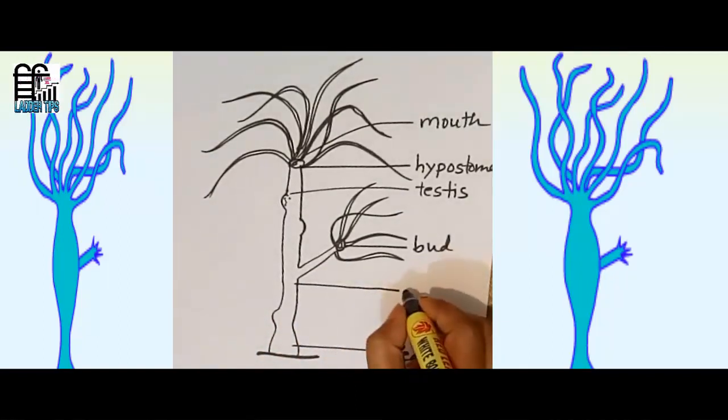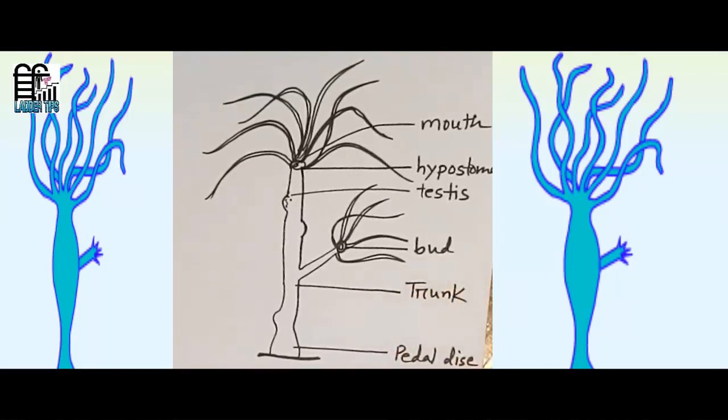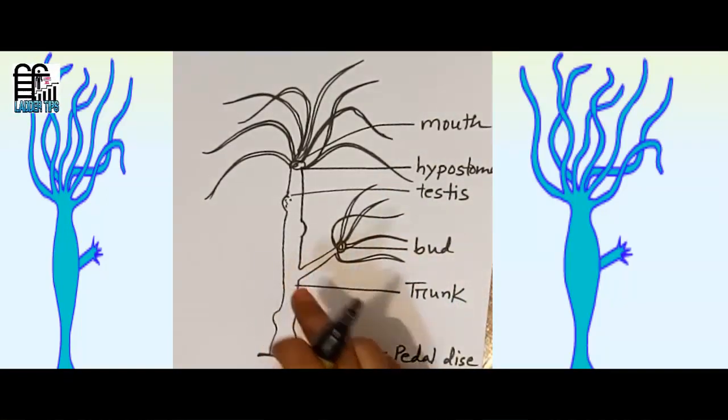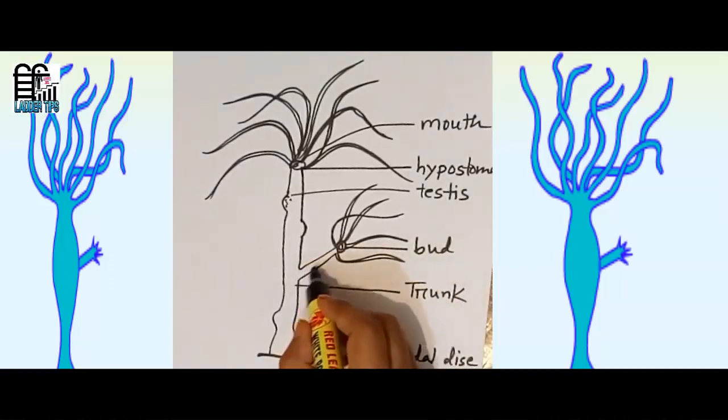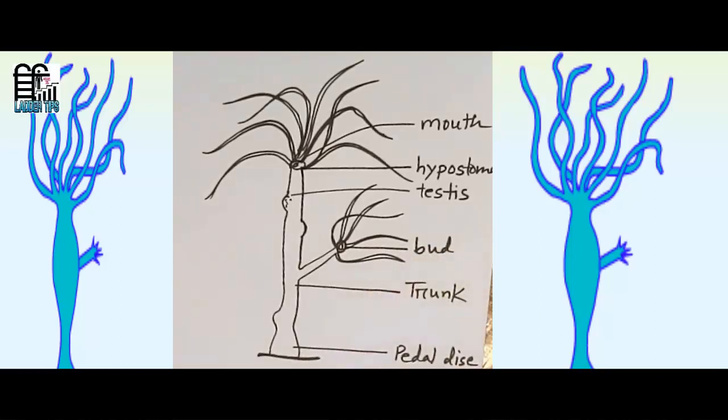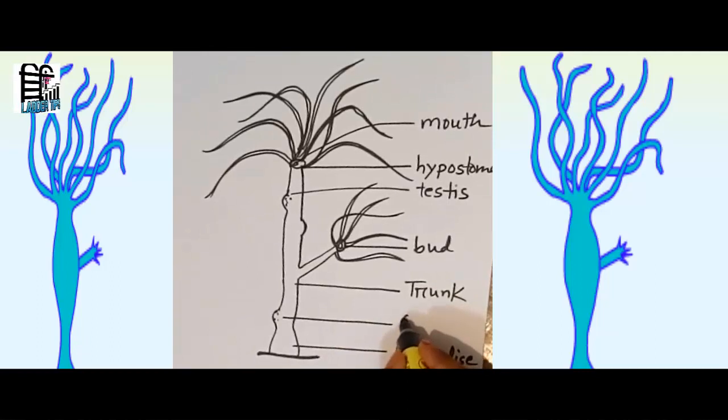Trunk of Hydra: the part of body between hypostome and pedal disk is called trunk. It may bear lateral buds in various stages of development. So see, this is bud and this one ovary.